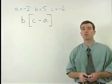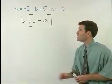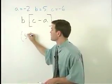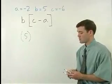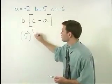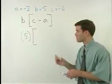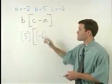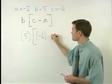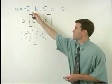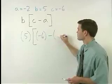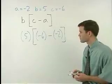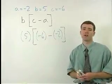Now we can continue just like we did the previous example. B is 5, so we substitute a 5 in for B. Bring down your bracket. C is negative 6, so we plug in a negative 6 for C. Bring down the minus. A is negative 2. Plug in a negative 2 for A. Bring down the bracket. And now we're ready to simplify the problem.